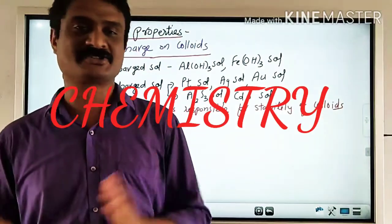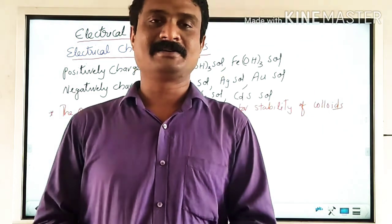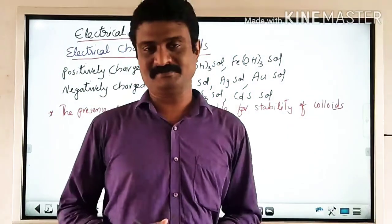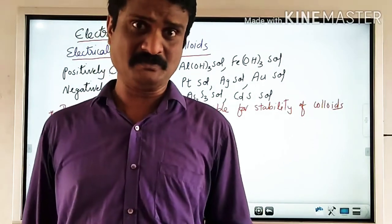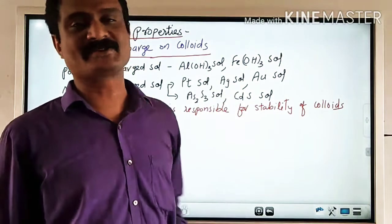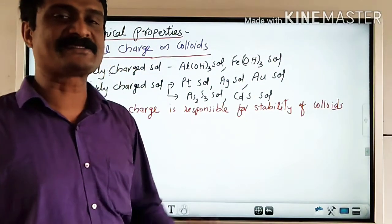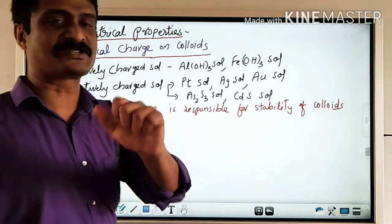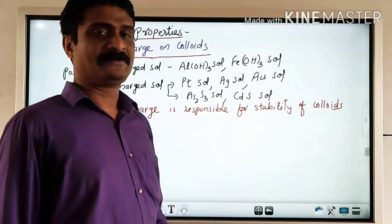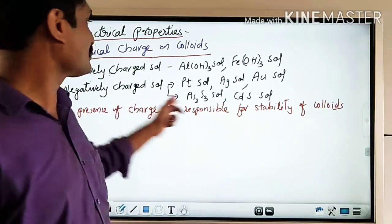In the last video we learned mechanical properties and optical properties of colloids. Today we are going to study the important electrical properties of colloids. The colloidal particles are electrically charged — the charge may be positive or negative. Examples of positively charged colloids include aluminum hydroxide sol Al(OH)3, ferric hydroxide sol Fe(OH)3, and examples of negatively charged colloids include metallic sols like platinum, silver, and gold.